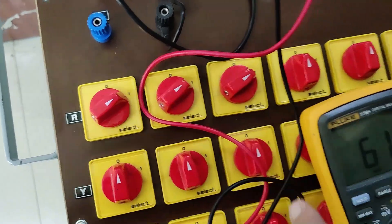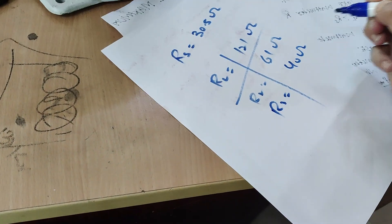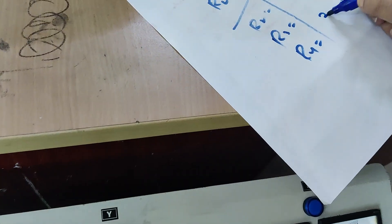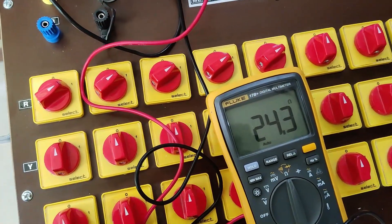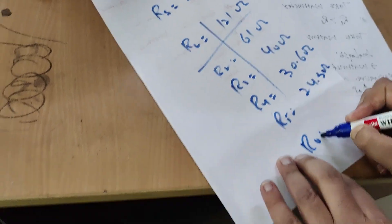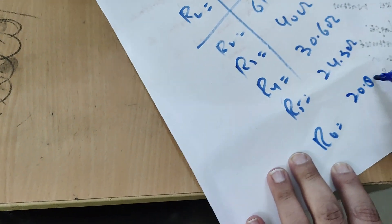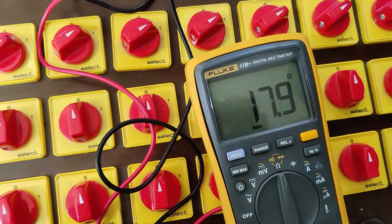I will connect three rheostats in parallel — you can see the resistance at R3 is 40 ohm. Similarly, I will give the fourth step: R4 is 30.6 ohm. R5 will be 24.3 ohm. R6 will be 20.8 ohm. R7 similarly will be 18 ohm.